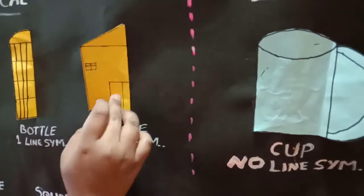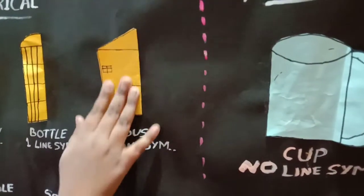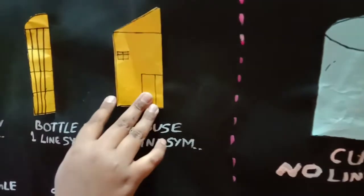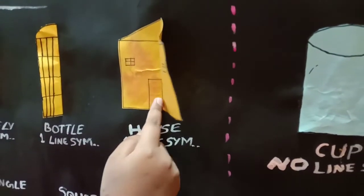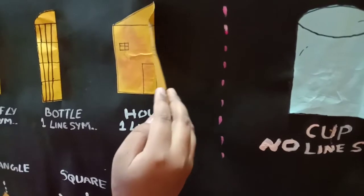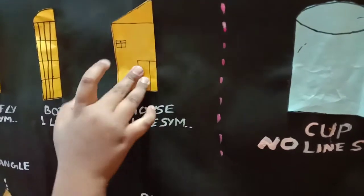Also house, I fold it and it is overlapping each other and it has identical halves. So it has one line of symmetry and it is a symmetrical shape.